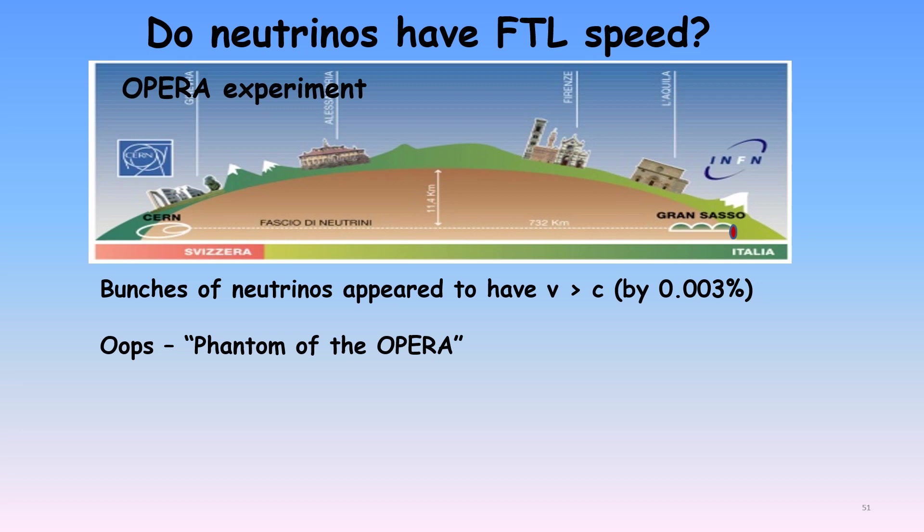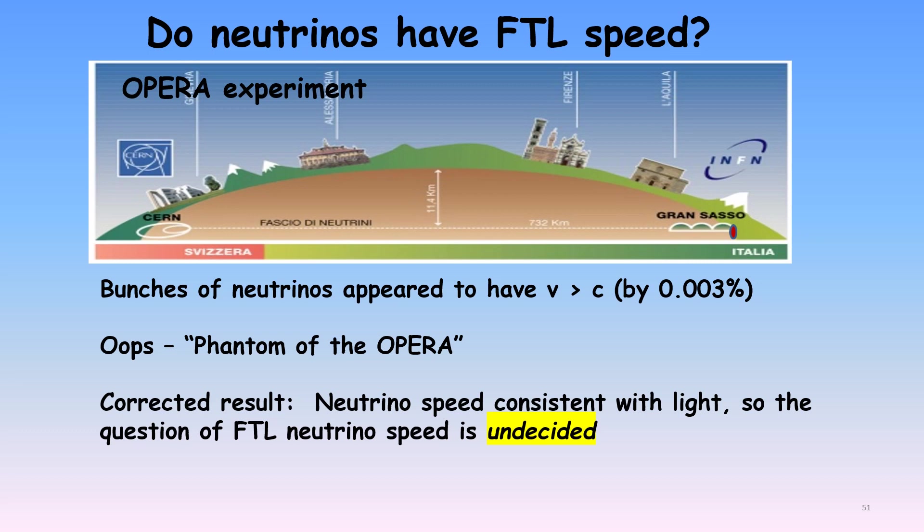That negative result, however, did not show neutrinos are not tachyons. That's because the true neutrino speed could have either been a tiny bit more or less than light. So, how can we resolve the matter? Well, clearly much greater precision could be obtained if a much longer travel distance were used. For the greatest possible precision, we would want to observe a burst of neutrinos from a distant astronomical source.